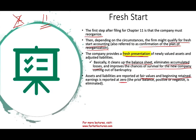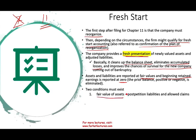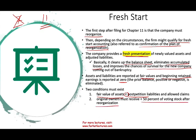That means any retained earnings — whether it's a deficit (negative) or surplus (positive) — is eliminated. When we have a fresh start, retained earnings start at zero. Two conditions must exist to be allowed a fresh start. First, the fair value of the assets must be less than the post-petition liabilities and allowed claims — post-petition meaning at the time the petition for bankruptcy occurs. Second, the original owners must receive less than 50% of the voting stock after the reorganization.